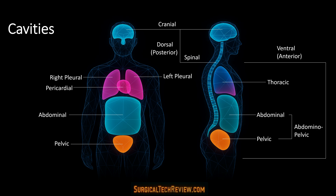The body cavities protect our internal organs. The dorsal cavity includes the cranial and spinal cavities, while the ventral cavity houses organs of the thoracic and abdominal-pelvic regions. Inside the thoracic cavity, you'll find the right and left pleural cavities and the pericardial cavity surrounding the heart. The abdominal-pelvic cavity contains organs of digestion, reproduction, and elimination.